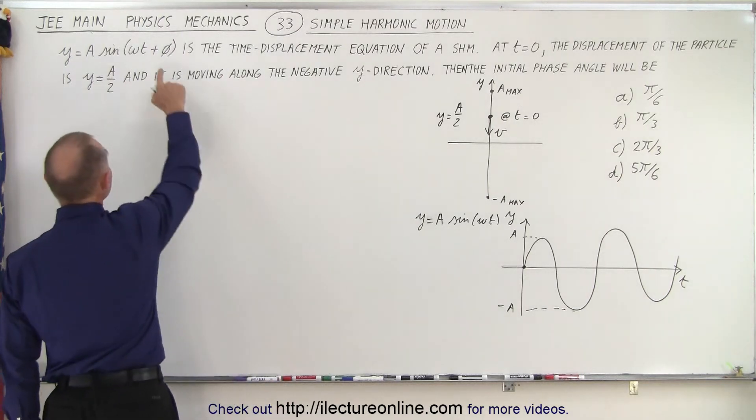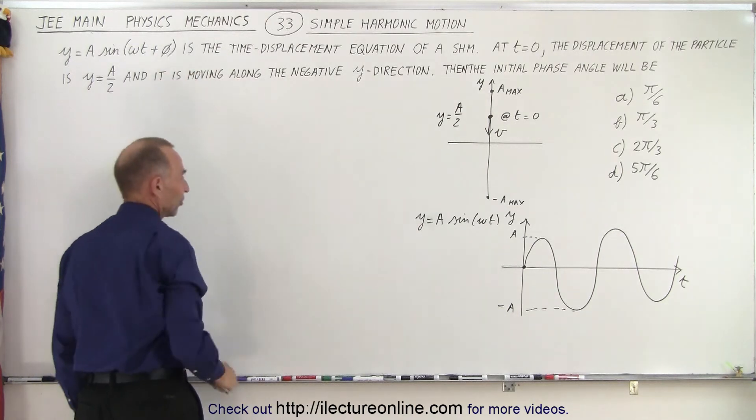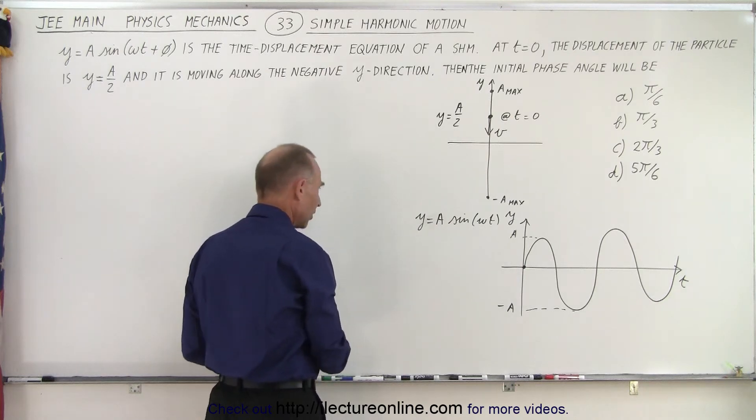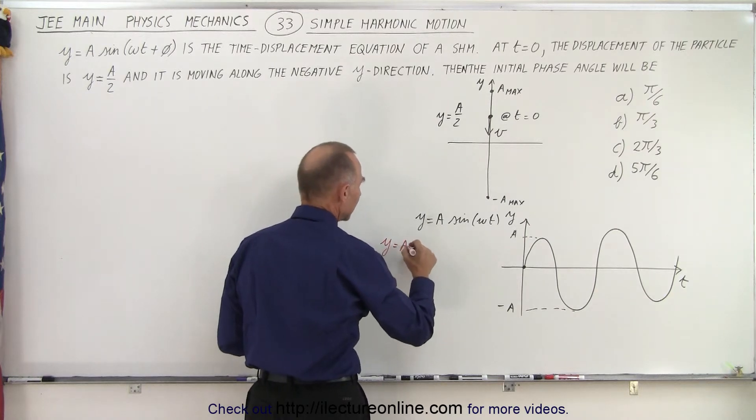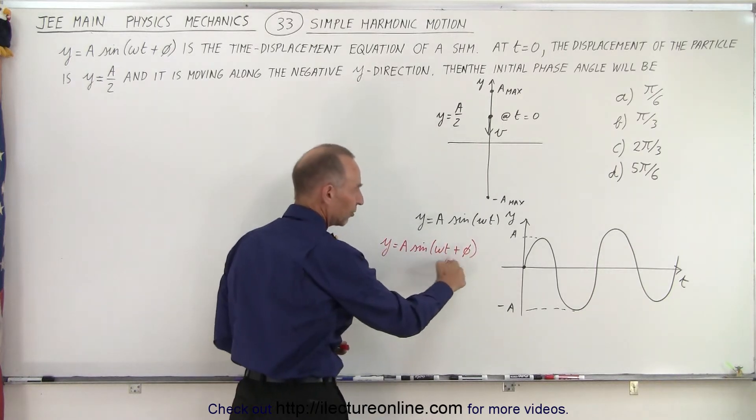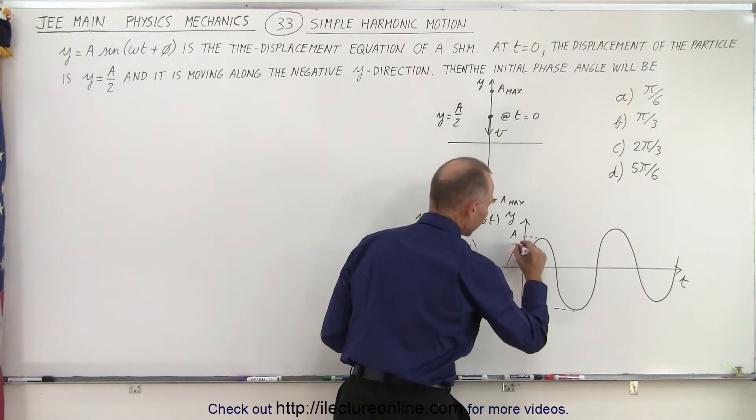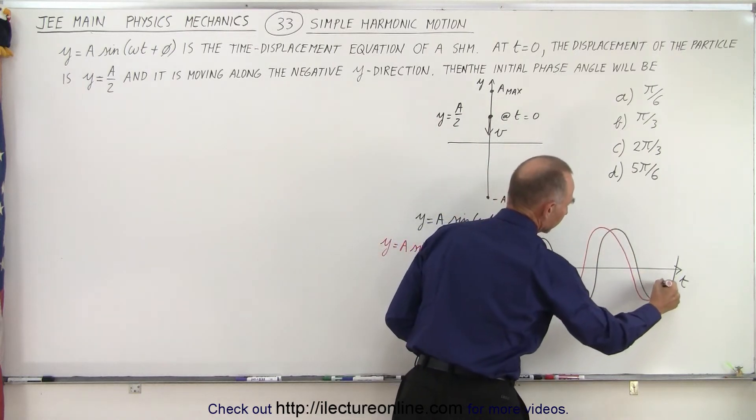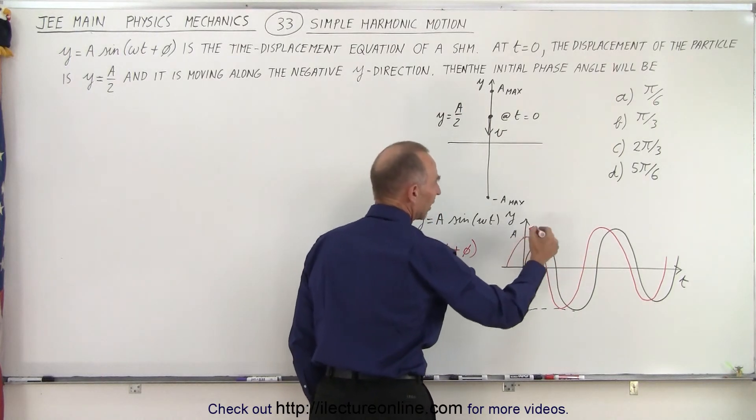Now, if we put a negative phase angle, it moves everything to the right. If we put a positive there, it moves everything to the left. So what we're going to do now is say, okay, what if we have an equation that looks like this? What if we have y equals a times the sine of omega t plus some sort of phase angle? Well, the plus means it's going to move to the left, which means that this graph is moving to the left like this. That shifts the whole graph to the left by a phase angle phi.